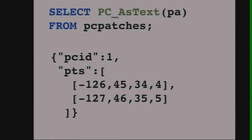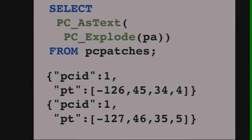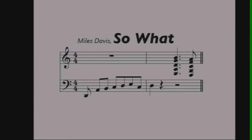The as-text representation of the patch looks a lot like the point, except now we've got two point values inside our patch — the world's smallest point cloud. We did an aggregation with the PCPatch function. We can do the opposite — an explosion — take a patch and blow it out into all of its component points. Exploding our patch back out and taking the as-text of those points, we get one row per point with the same values back.